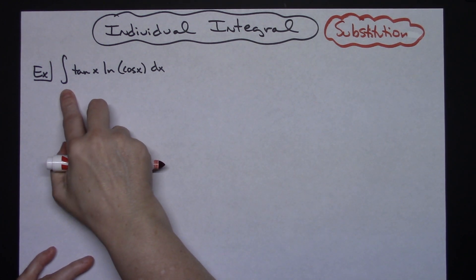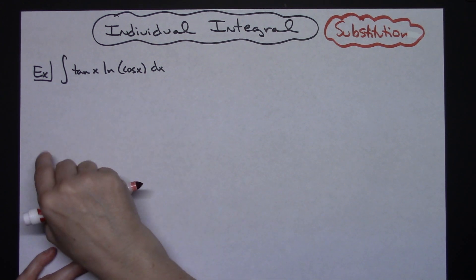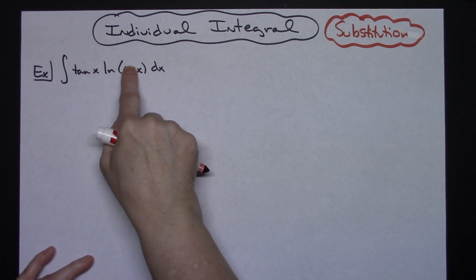Alright, so let's say we've got the integral of tangent x natural log of cosine x dx. Alright, well first of all I'm going to start with the innermost part of this function and that's what I'm going to let my u be.